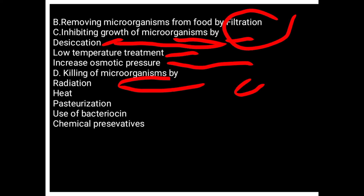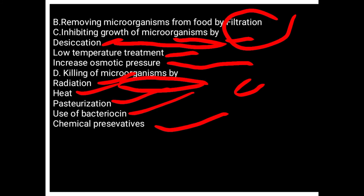چوتھا اور آخری طریقہ ہے: killing microorganisms۔ ہم microorganisms کو kill کرتے ہیں radiation کے ذریعے، heat کے ذریعے، pasteurization کے ذریعے، bacteriocins کے استعمال سے، یا chemical preservatives کے ذریعے۔ اس lecture میں جتنی بھی methods discuss کی گئی ہیں، ان سب کی definitions اگلے lecture میں بتائی جائیں گی۔